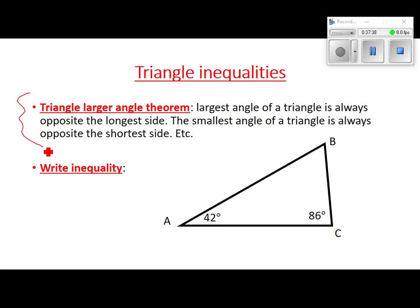The larger angle theorem is the exact opposite: instead of starting with sides, we start with angles. First, find angle B using the fact that three angles of a triangle must add up to 180. The other two angles sum to 128, so angle B is 52 degrees. Then write out the lengths of the sides in order, smallest to largest and largest to smallest. Read test questions carefully — one question may ask smallest to largest, the next may ask largest to smallest.